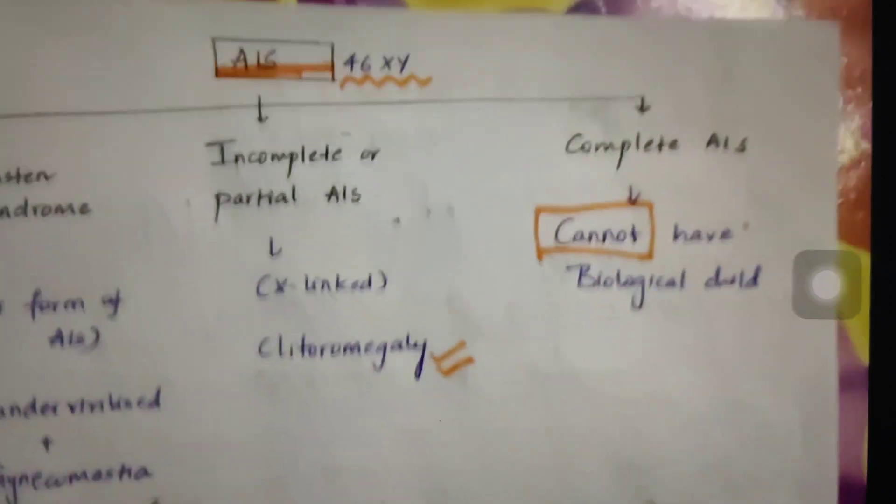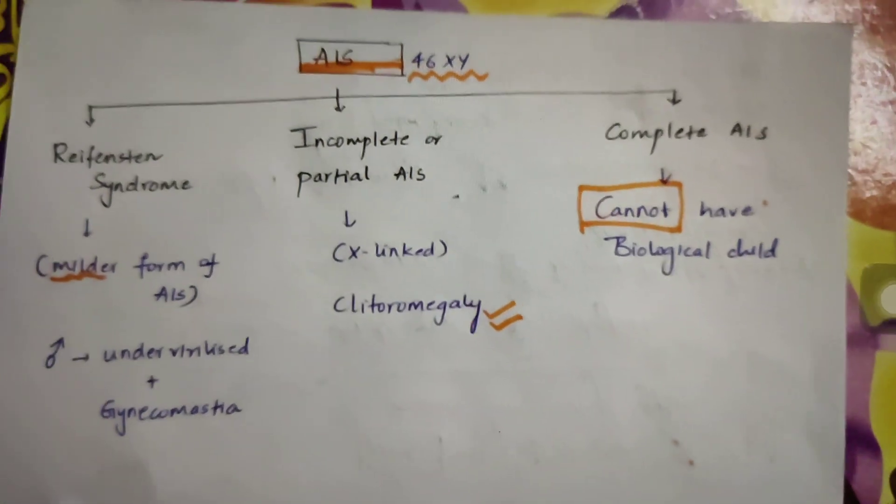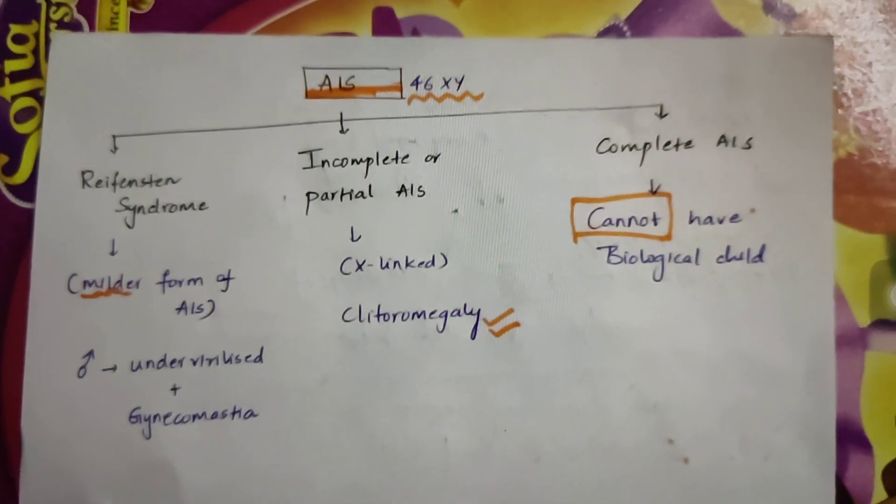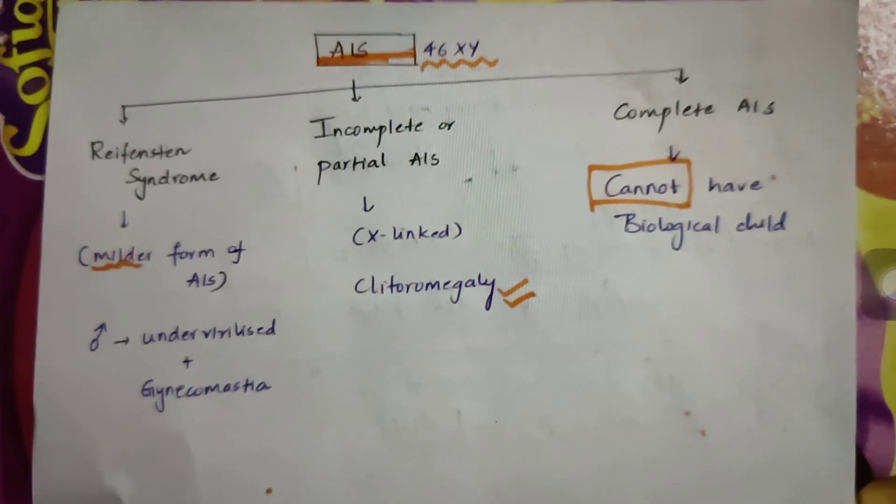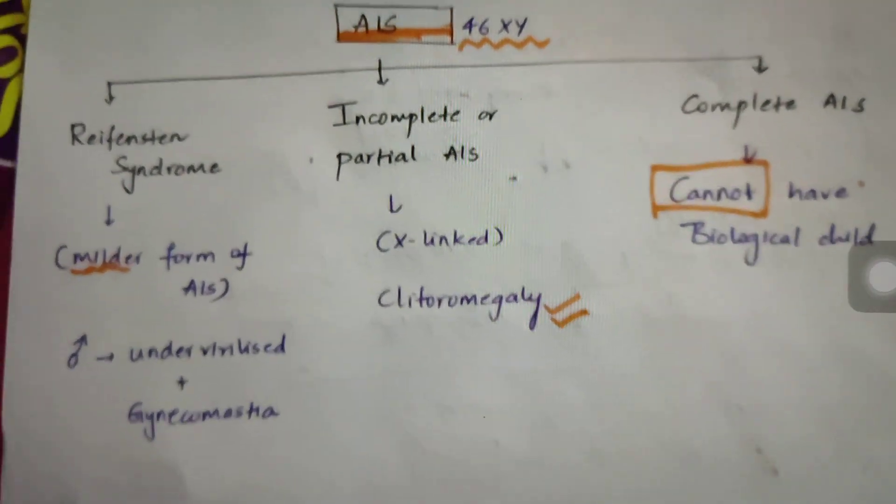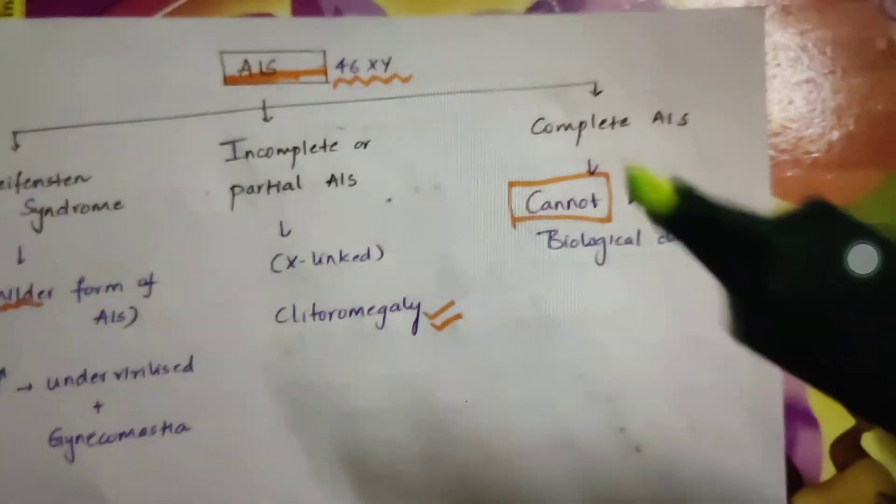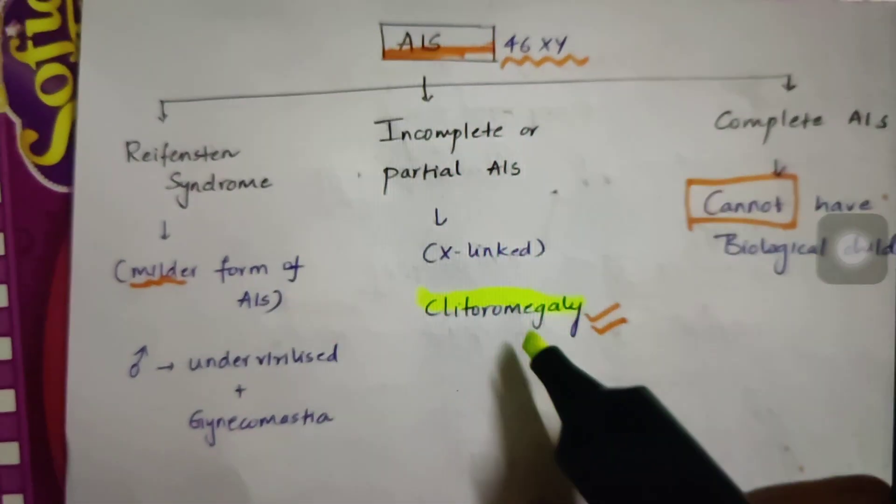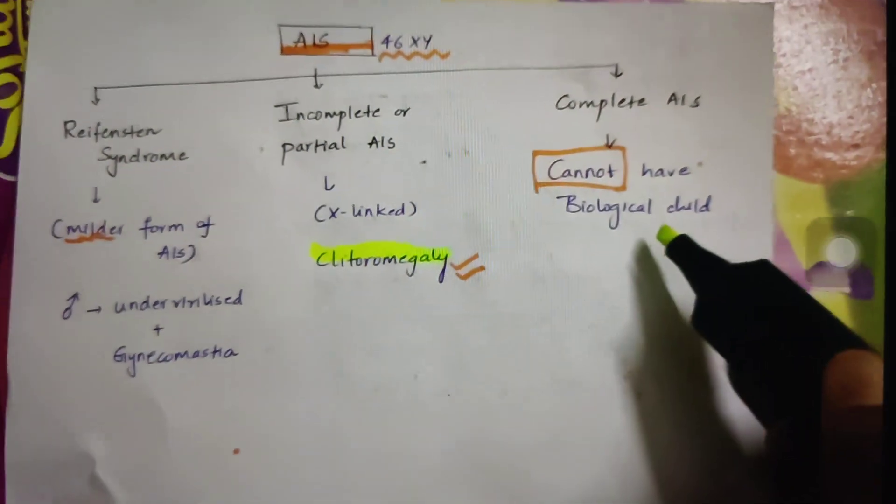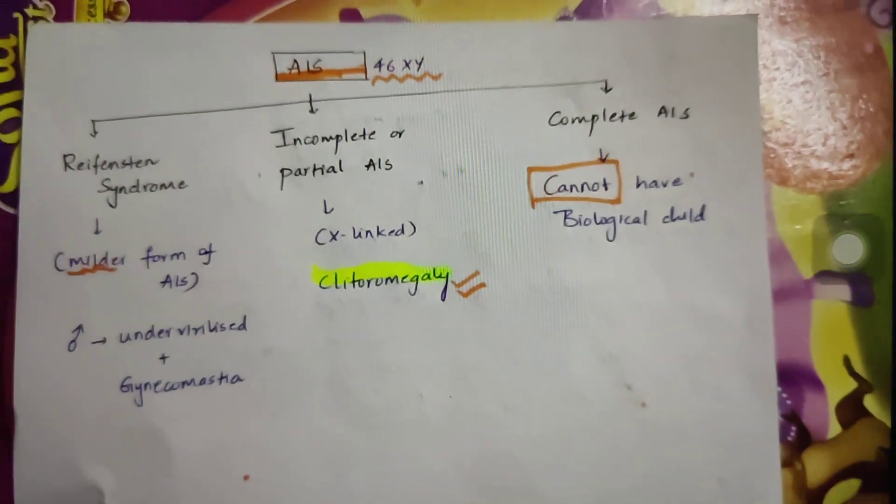Now coming to AIS types. You need to know about the types of AIS. It is of three types: Reifenstein syndrome, incomplete, and complete. Reifenstein is exactly similar to AIS, which is a milder form that you need to remember. That is, a male patient presents with under-virilized and gynecomastia. Whereas incomplete and partial AIS, the clincher point here is clitoromegaly. So you need to remember about clitoromegaly here. In complete AIS, the patient cannot have biological child. So these are the important points regarding AIS.